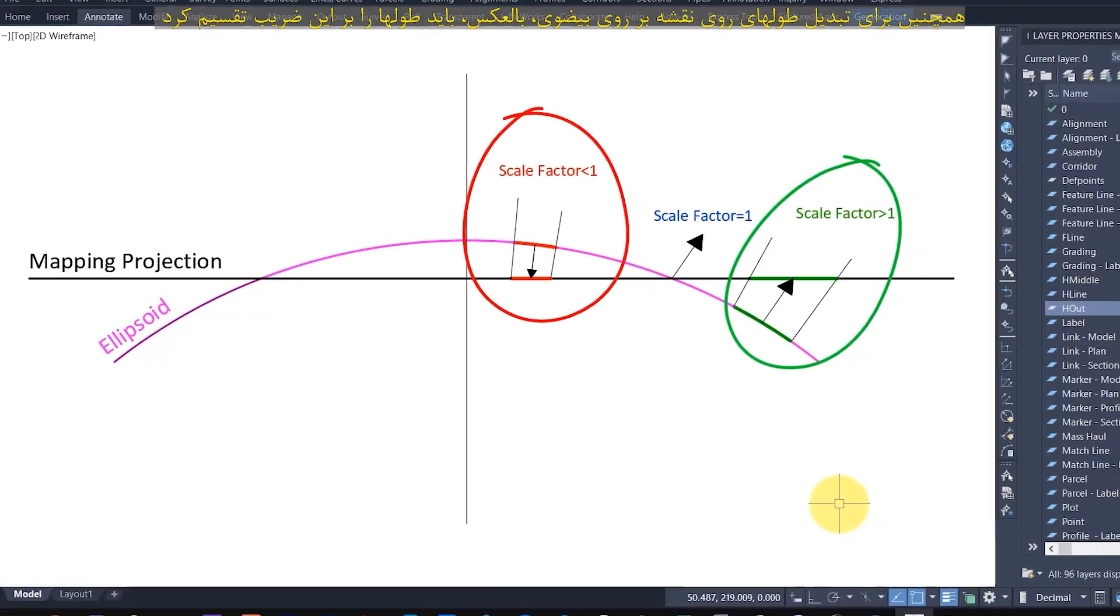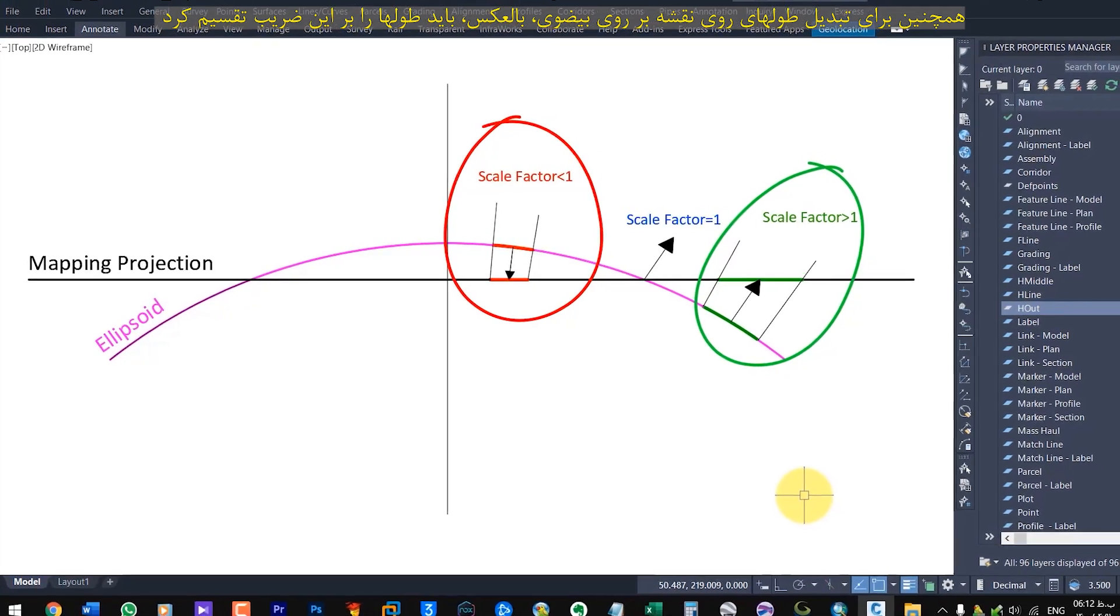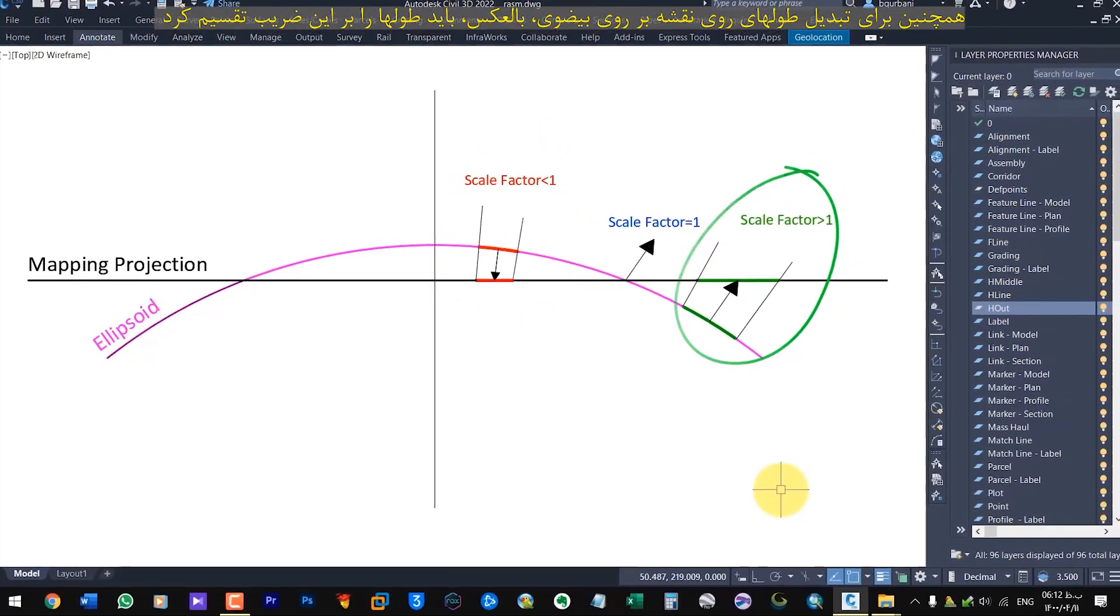Also to convert the lengths on the map to the ellipsoid, the lengths must be divided by this factor.